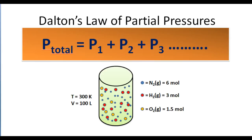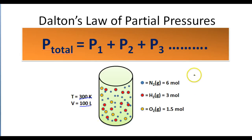I'll tell you the amounts of each gas present in this container. We've got six moles of nitrogen, three moles of hydrogen, and one and a half moles of oxygen. The temperature of the gas in this container is 300 K, and the volume is 100 liters. We want to calculate the total pressure of the gas in this container.